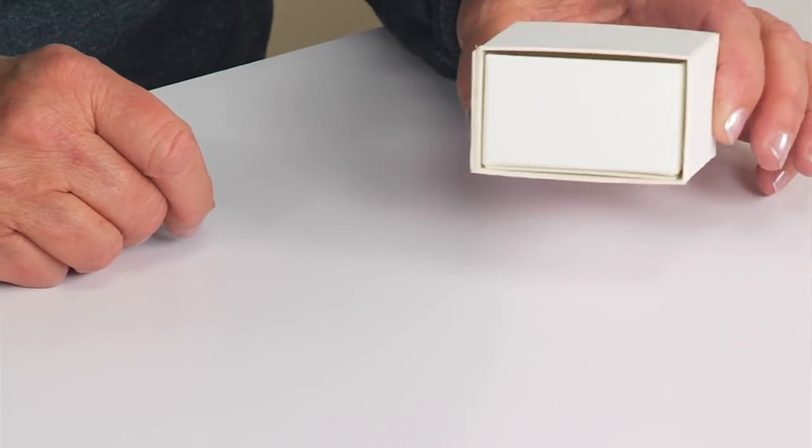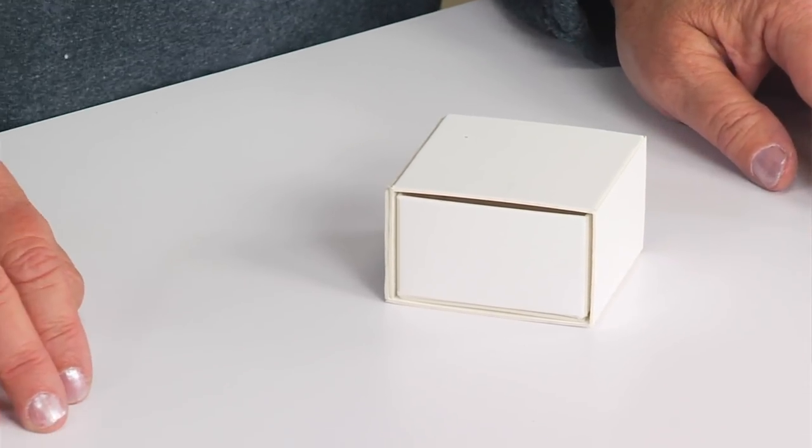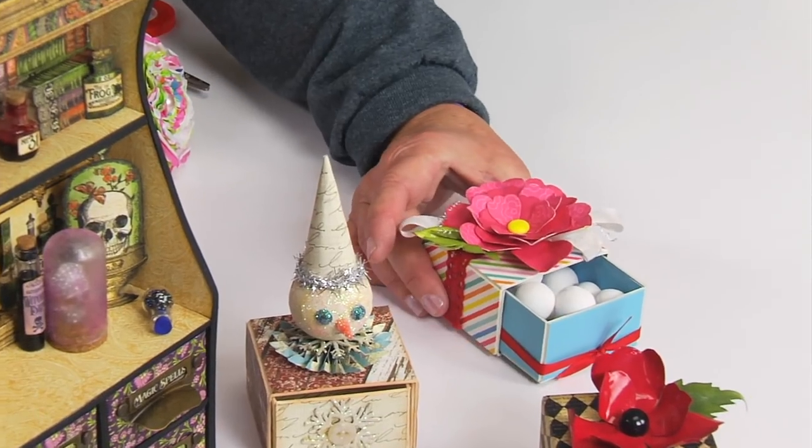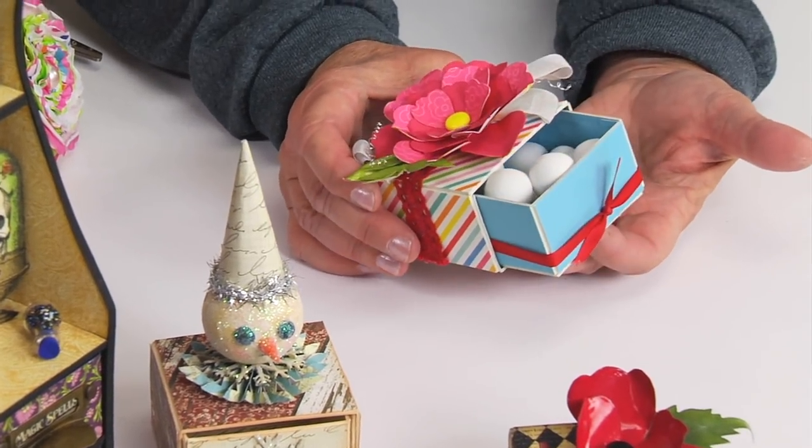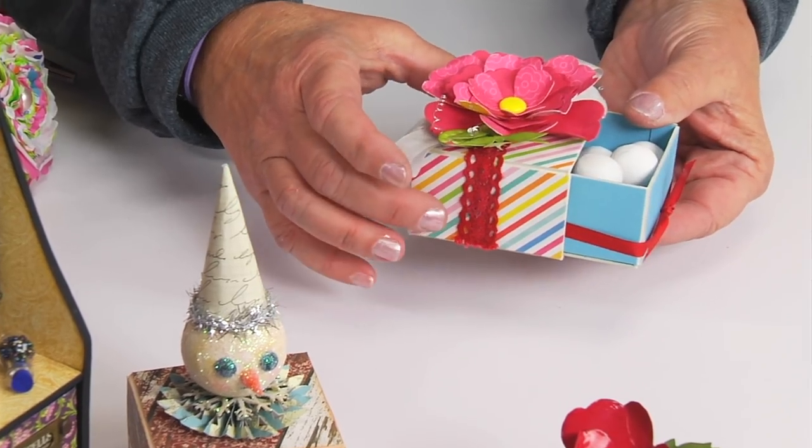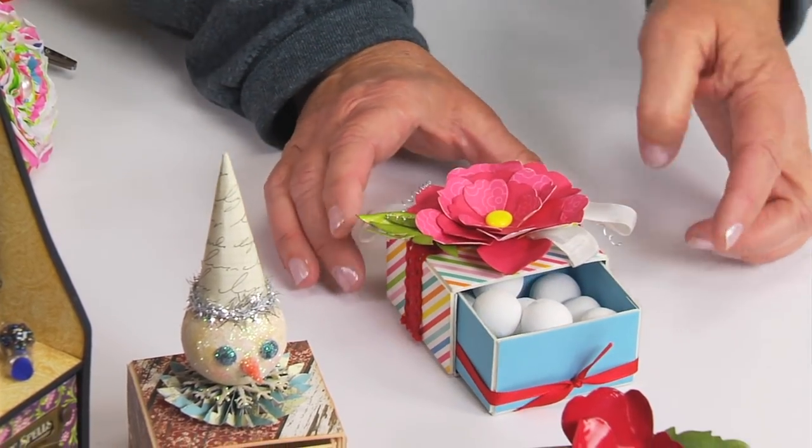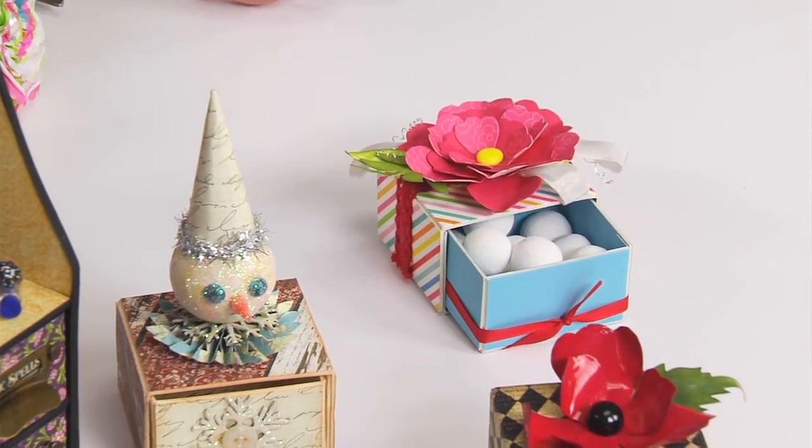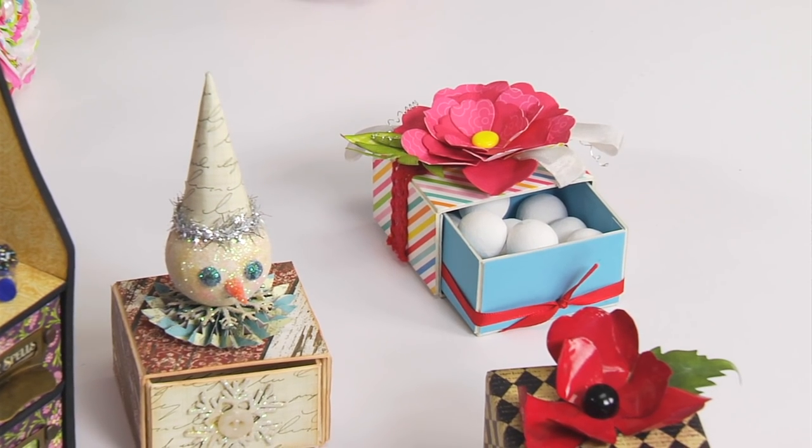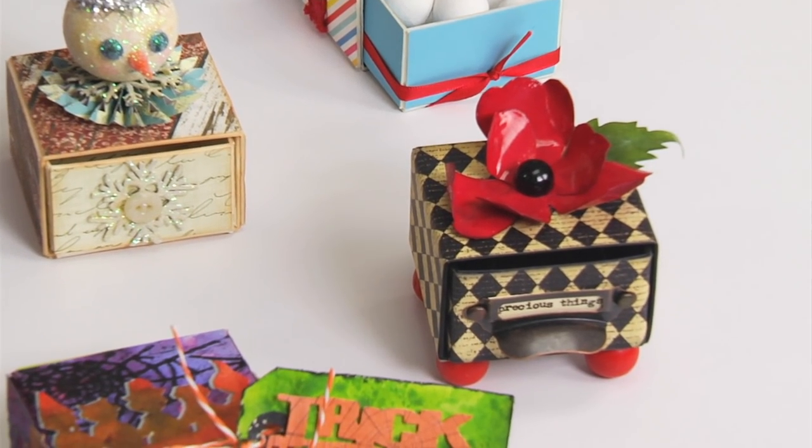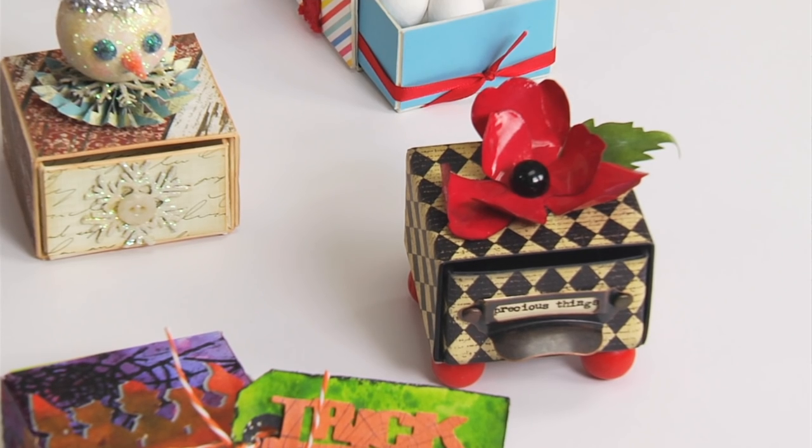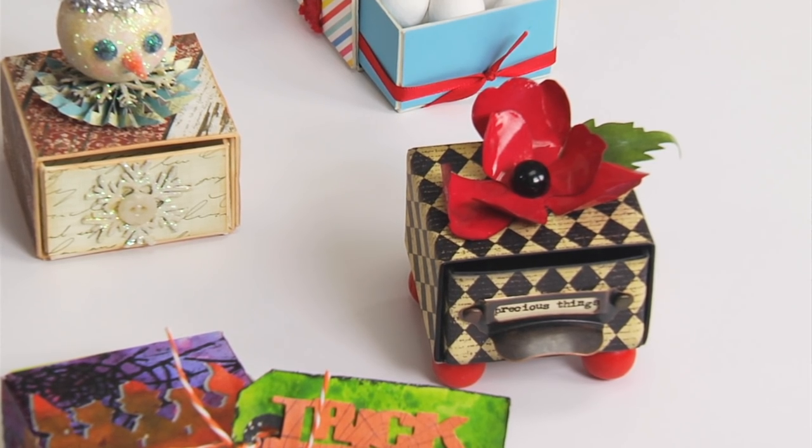Now let me show what you can do with it to make it really cool. Here we have a cute little box that has candy in it that they have covered the slider part with paper and covered that with a solid and added a beautiful little flower on top. And here we have the same idea. Another flower on top with kind of a harlequin pattern.